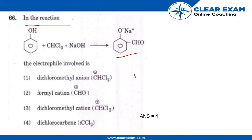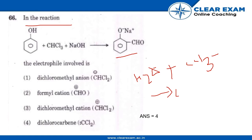The reaction proceeds as: H2O, then CCl3⁻ gives CCl2 + Cl⁻. So we get CCl2, which is basically dichlorocarbene. Therefore, the electrophile involved is dichlorocarbene.